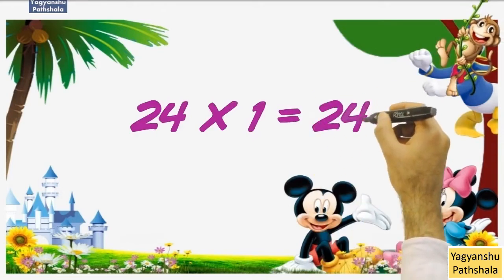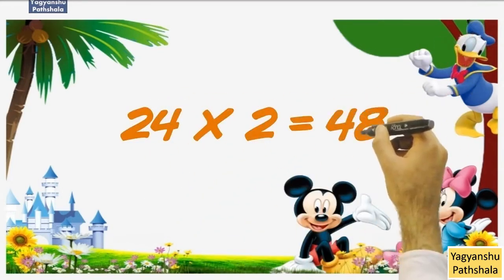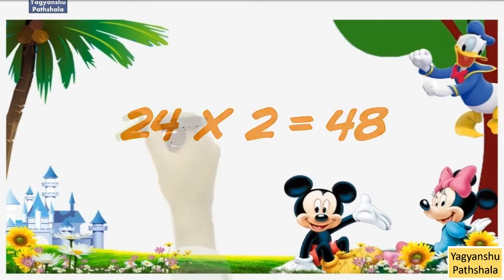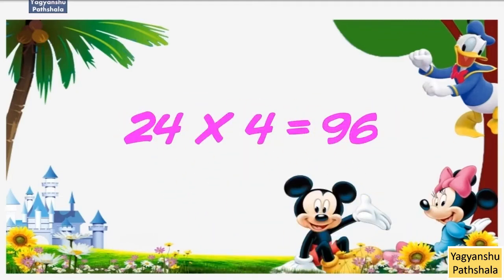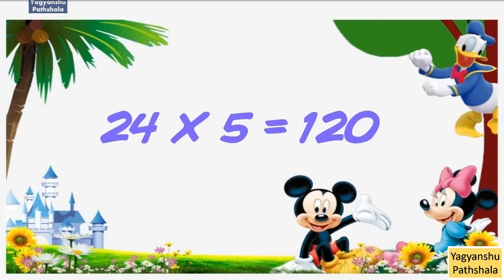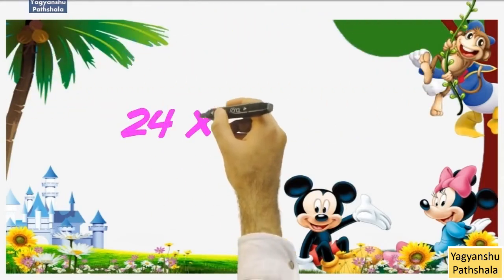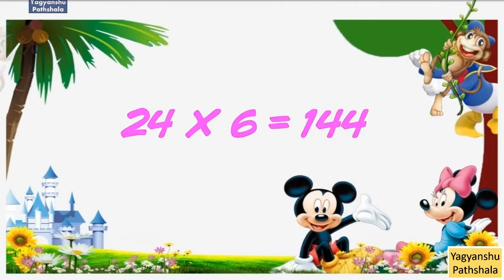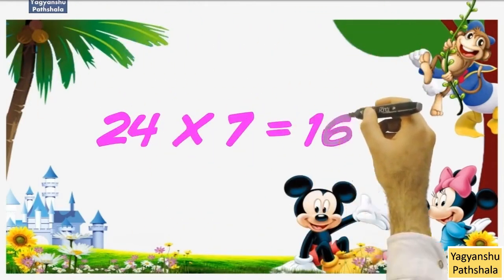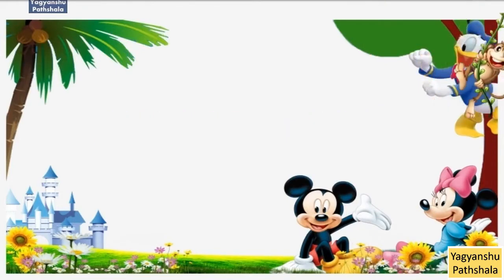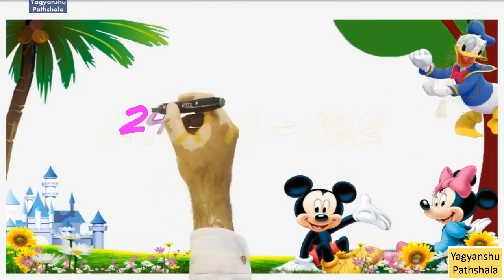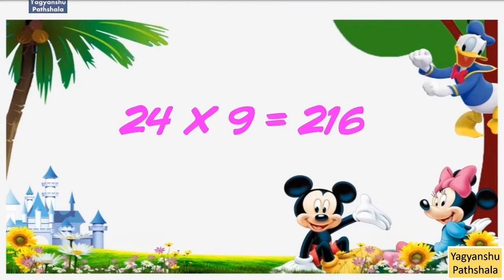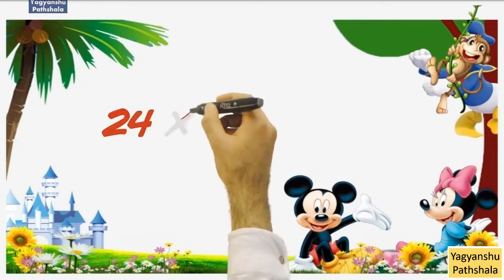Table of 24. 24 1 Jaa 24. 24 2 Jaa 48. 24 3 Jaa 72. 24 4 Jaa 96. 24 5 Jaa 120. 24 6 Jaa 144. 24 7 Jaa 168. 24 8 Jaa 192. 24 9 Jaa 216. 24 10 Jaa 240.